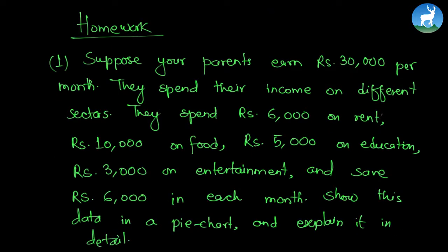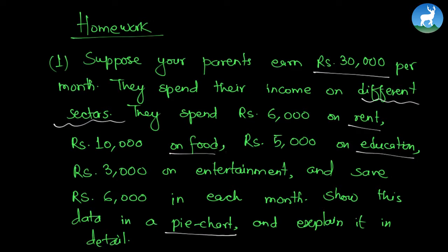With this we have come to the end of today's class. Your homework is to draw a pie chart based on given information: your parents earn rupees 30,000 per month and spend on different sectors — rupees 6,000 on rent, 10,000 on food, 5,000 on education, 3,000 on entertainment, and they save 6,000 each month. Show this data in a pie chart and explain it using four different phrases in three neatly written paragraphs. If you have any questions, feel free to write us at learning@diwalk.edu.np. Thank you.